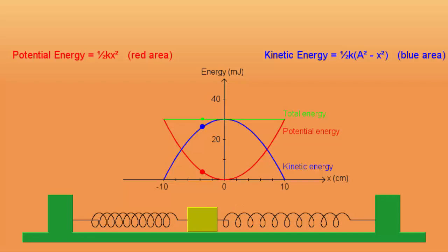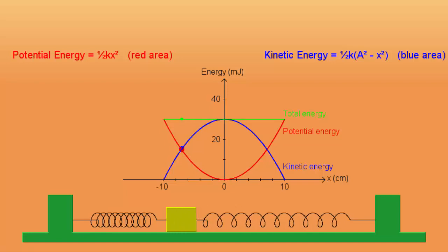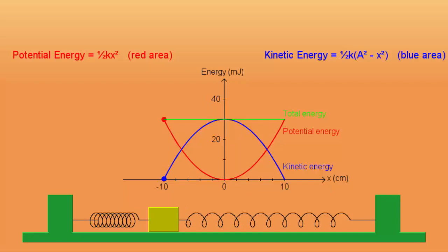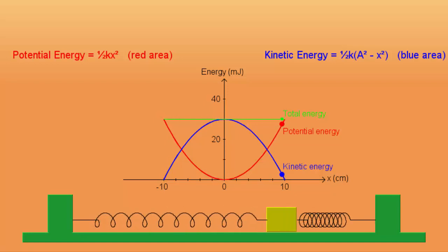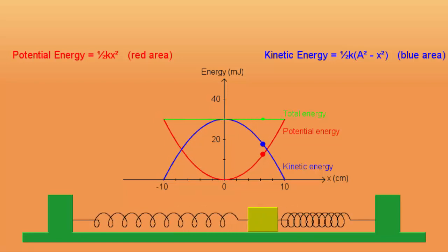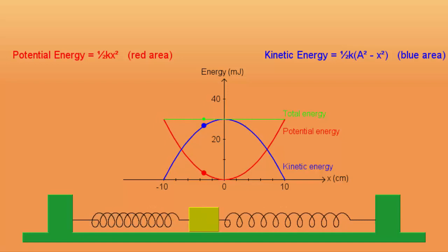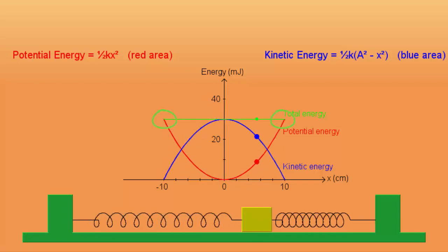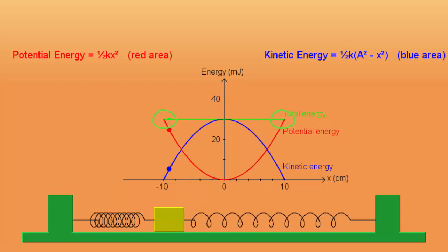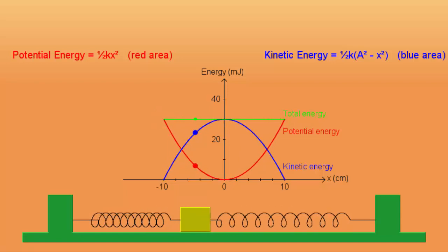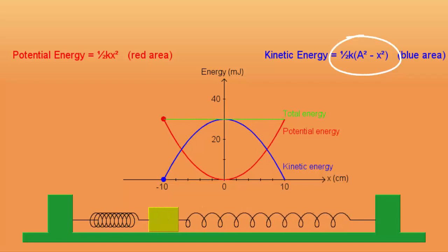As the mass swings past its equilibrium towards the other amplitude, it slows down again and loses kinetic energy, while at the same time gaining potential energy. From the graph, it can be seen that the energy of the mass changes from potential energy to kinetic energy, then back to potential energy again, while the total energy remains constant. The total energy is the maximum potential energy at the maximum displacement, or at the amplitude. The kinetic energy at any point is the difference between the total energy and the potential energy at that point.